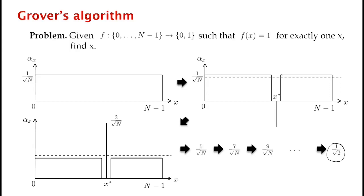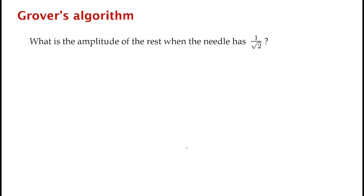All this was slightly approximate because we were assuming that the mean doesn't really decrease that much. So let's rigorously justify this. To do so, let's figure out what's the amplitude of the rest of the elements when the needle has amplitude 1 over square root 2. Well, there's 1 over square root 2 amplitude to be distributed among basically N other elements, so each of them has amplitude at least 1 over square root 2N.